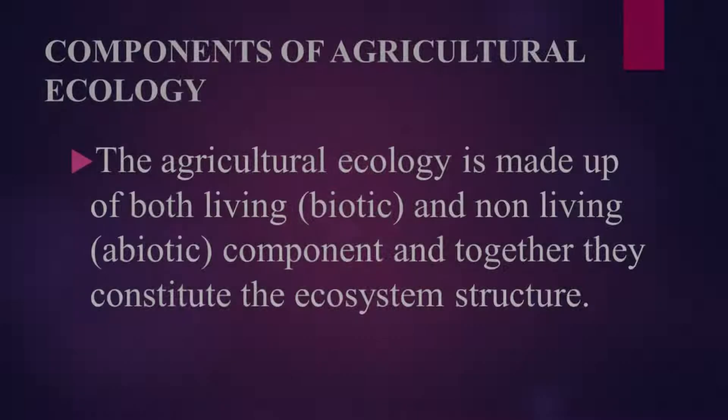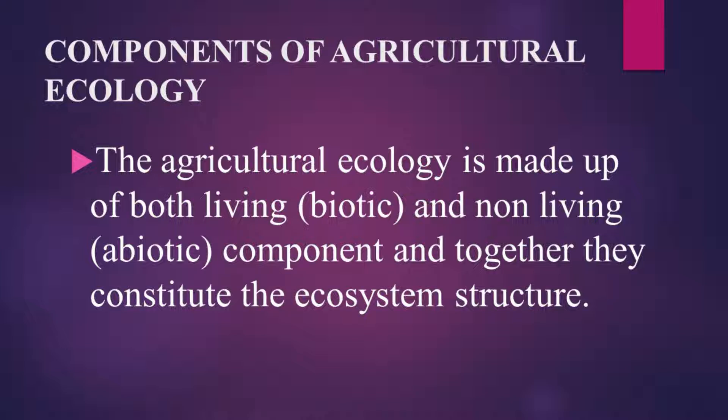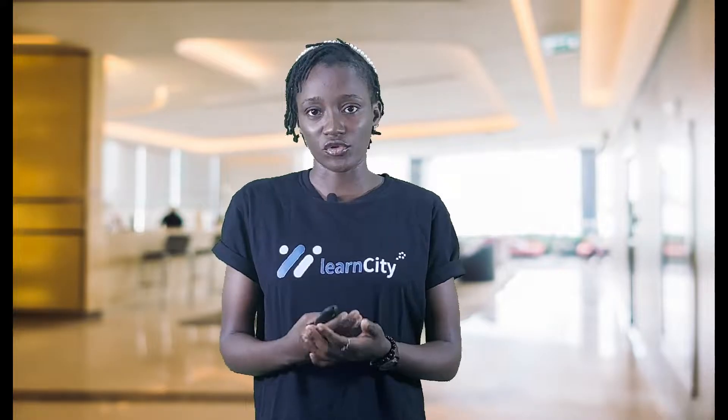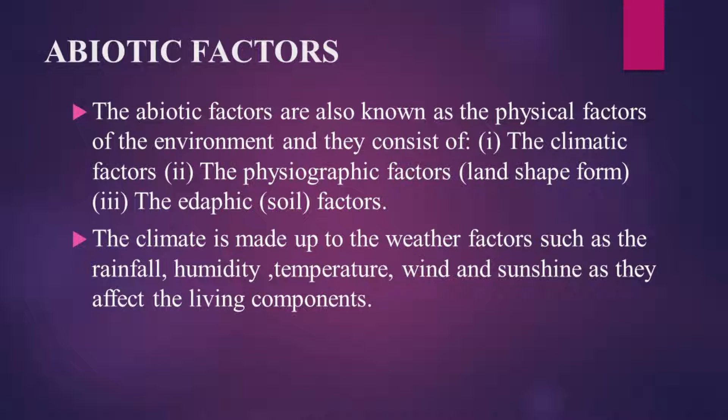Agricultural ecology combines science with traditional, practical, and local producers' knowledge. The components of agricultural ecology are made up of both living — that is, biotic — and non-living — that is, abiotic — components, and together they constitute the ecosystem structure. The non-living matter constitutes the abiotic factors, while the different living organisms such as plants and animals in their environment are called the biotic factors.